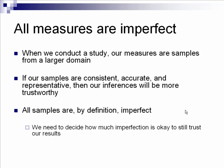To do this, we need to understand a couple of things. First, we need to understand that all the measures that we would look at are imperfect. Whenever we conduct a study, our measures are samples from a larger domain. What we hope is that if our samples are consistent, accurate, and representative, then the inferences we make from those samples will be trustworthy. But all samples, by definition, are imperfect.